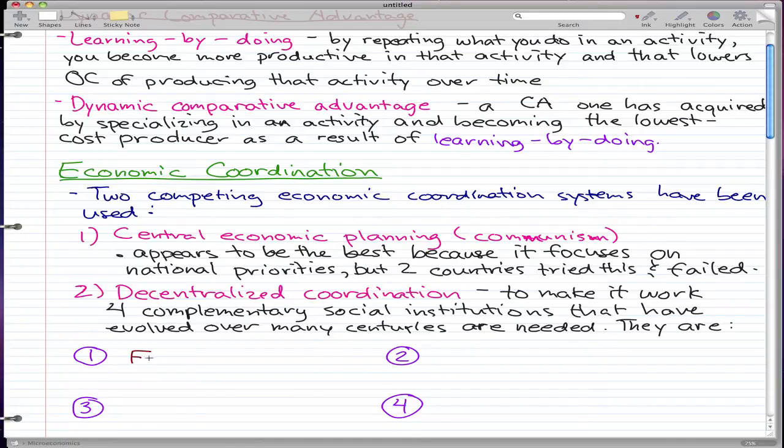One, firms. Two, markets. Three, property rights. And four, money, things we love the most.